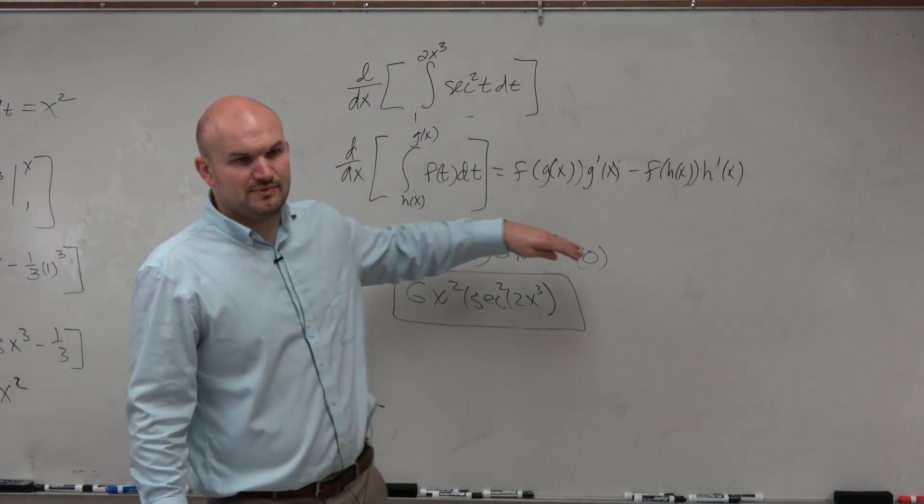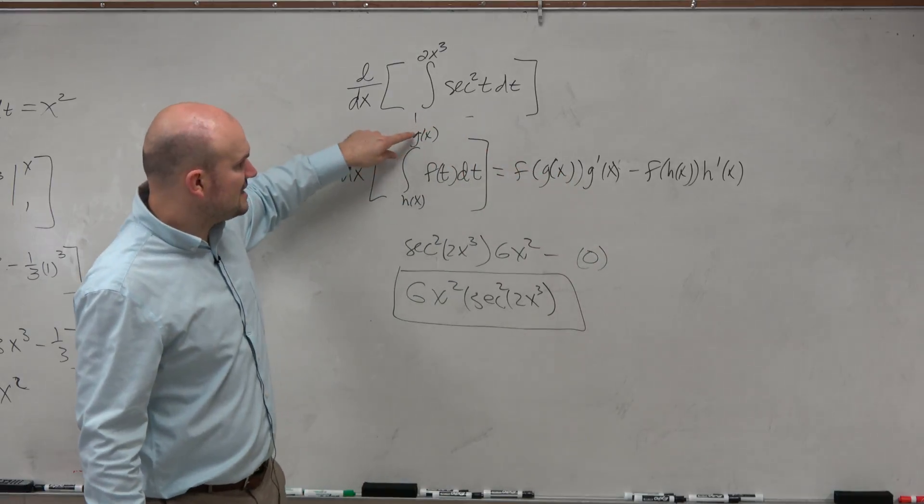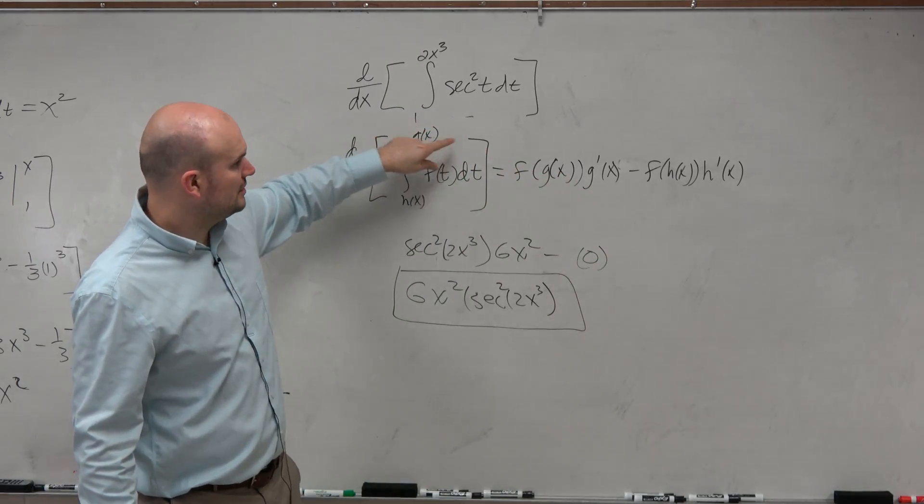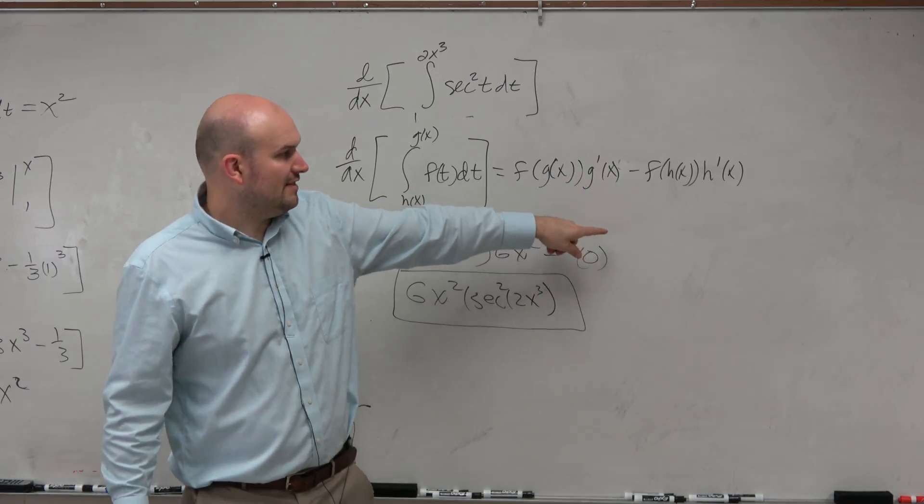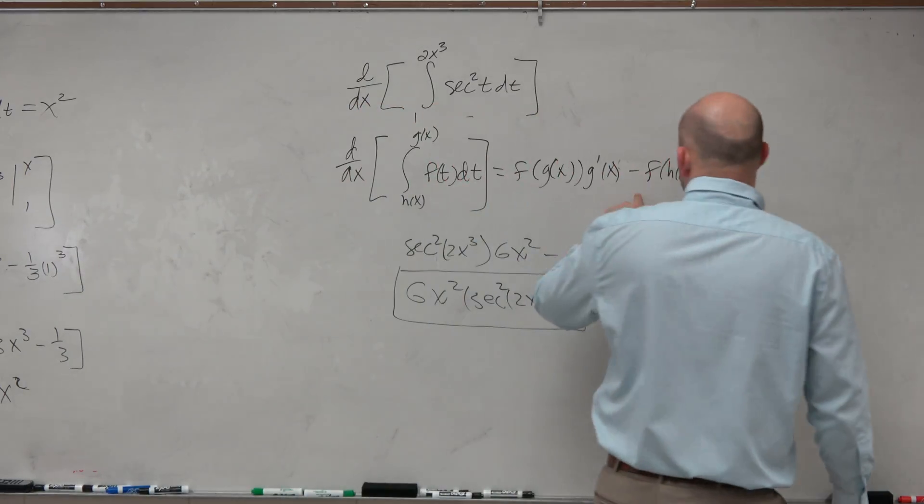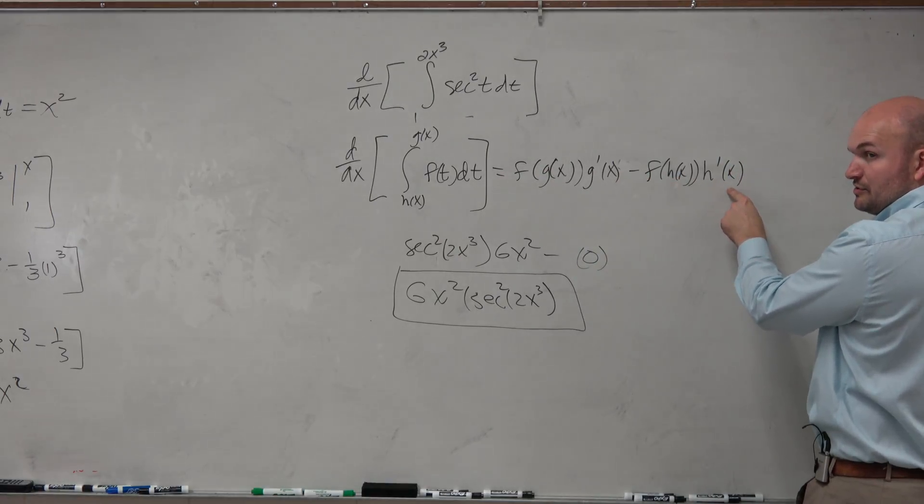Now, before you start looking, whoa, that's way too much stuff for me to remember, just look at really what we're doing. We're just taking the top, plugging it into my function, and then multiplying by its derivative. And then subtracting taking the bottom, plugging it into the function, and then multiplying it by its derivative.